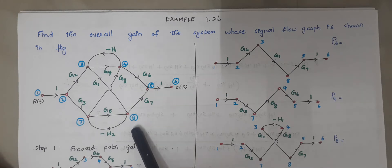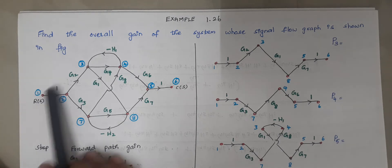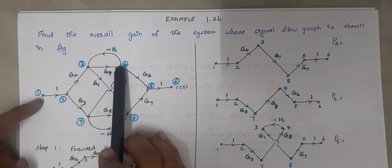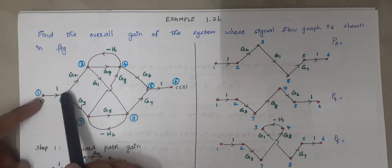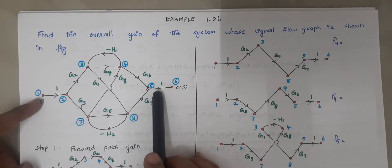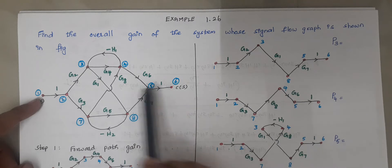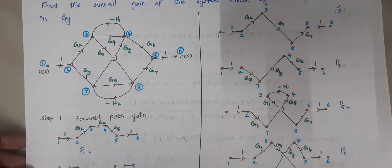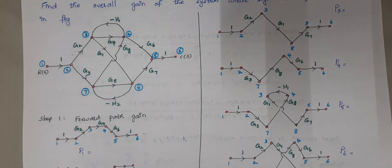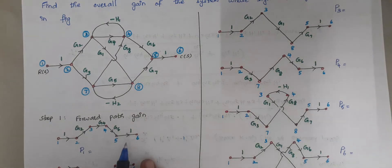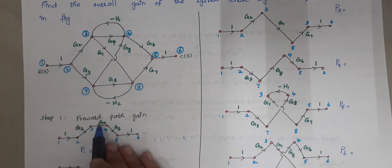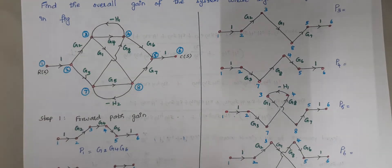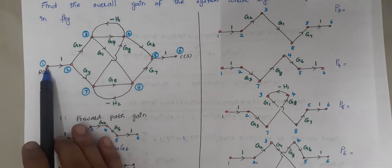In this problem there are totally 8 nodes. The first forward path starts from node 1, 2, 3, 4, 5, 6. This is the first forward path and it consists of only arrows which move forward. The forward path gain is calculated by multiplying the gain present in each branch of that path. So P1 = G2 × G4 × G6.